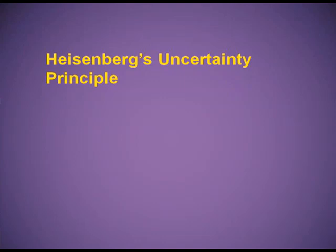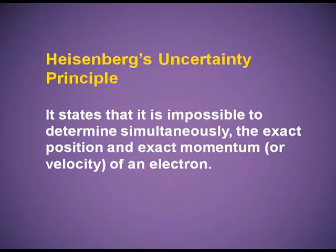The electron microscope is based on this observation. Heisenberg's uncertainty principle states that it is impossible to find simultaneously the exact position and momentum or velocity of a subatomic particle. Separately, we can find out both things — position accurately and momentum accurately. But if we try to find out these two things, position and velocity simultaneously, we cannot.